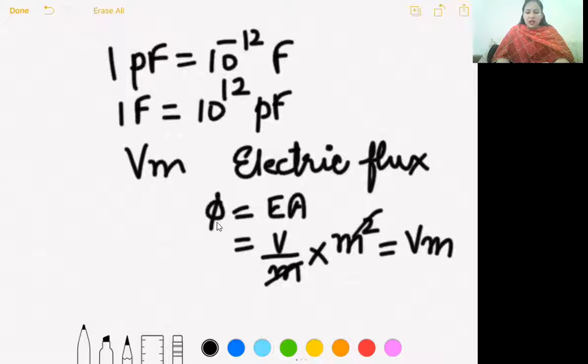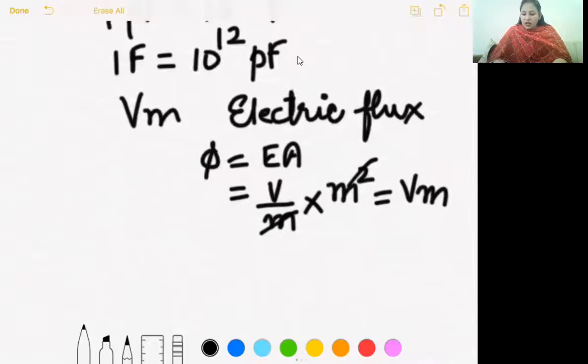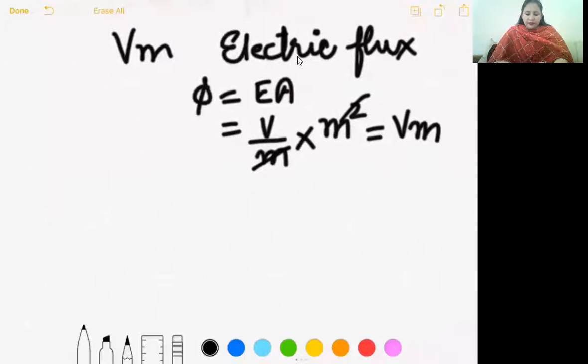Third is two point charges A and B having charges plus 4q and plus q respectively are placed apart with a force capital F between them. If 75 percent of charge is transferred from A to B, force between the charges becomes... You can solve and check, so F was the answer.